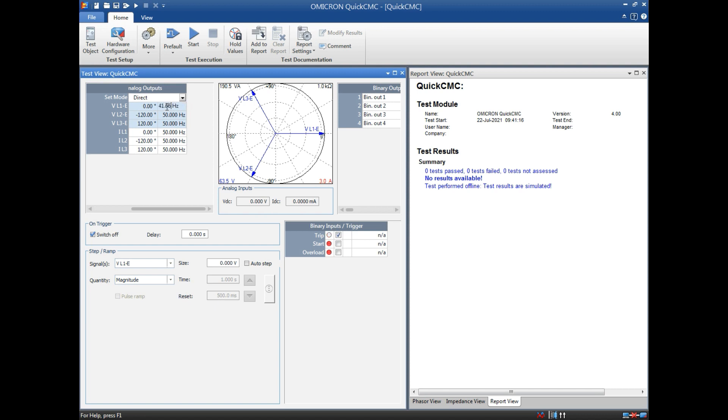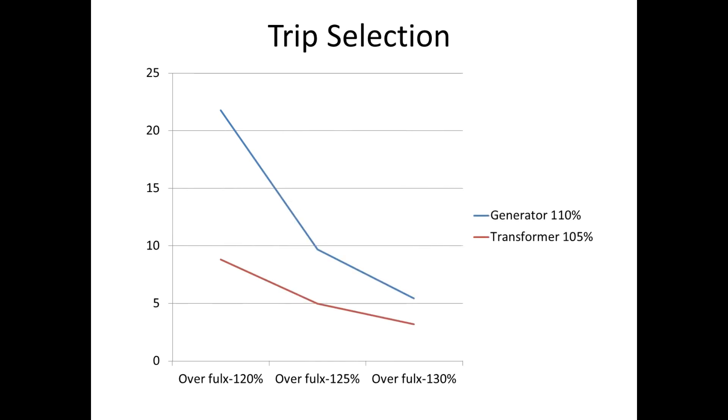When you go for injecting this over flux into the relay, we will get the trip time 21.7 seconds. This over flux trip will be there for both generator and transformer, so the generator should not overlap or it should not trip before transformer.